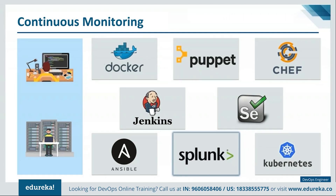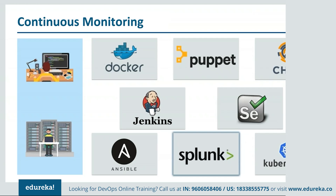To summarize, DevOps engineers are either developers or operations staff with additional skills: coding, cloud platforms such as Amazon Web Services, automated test and delivery tools, and logging and monitoring tools. Now is the time to understand what does it take to become a successful DevOps engineer.